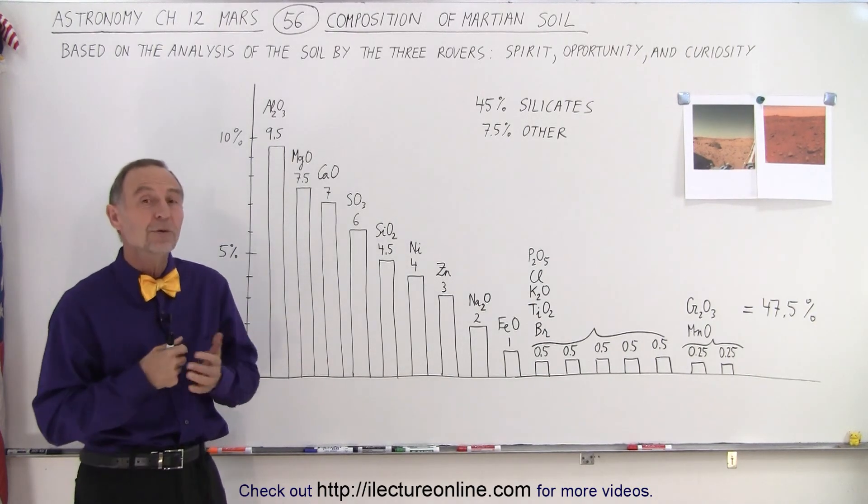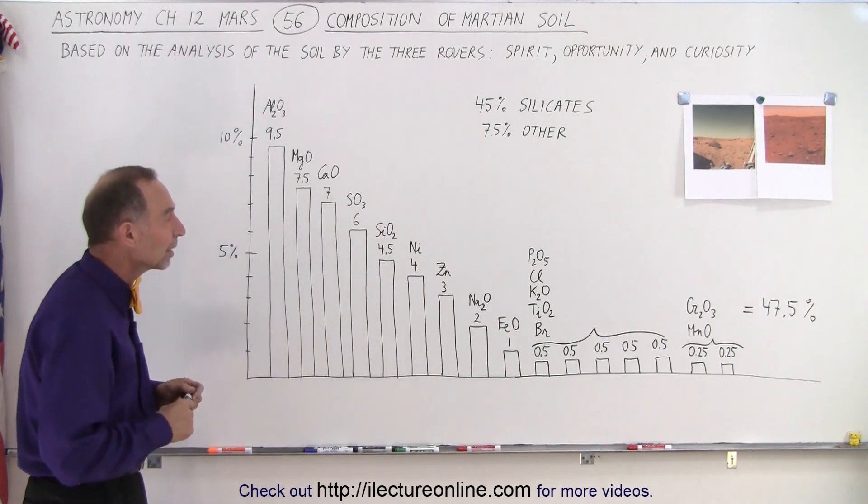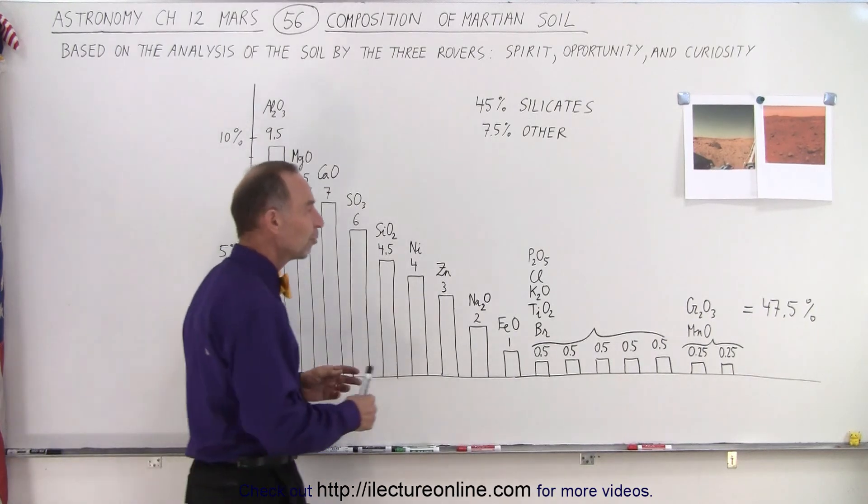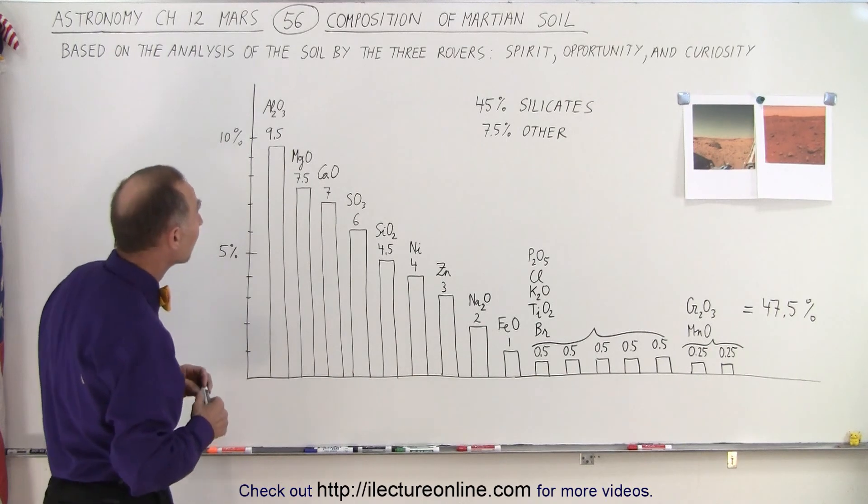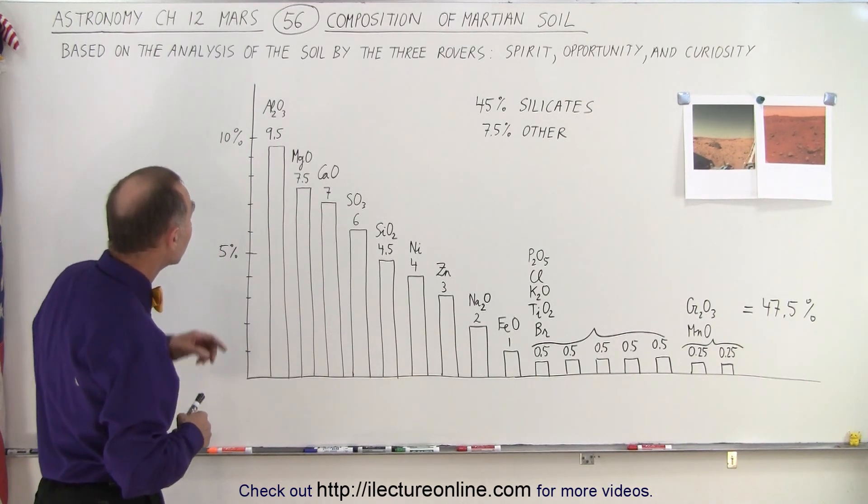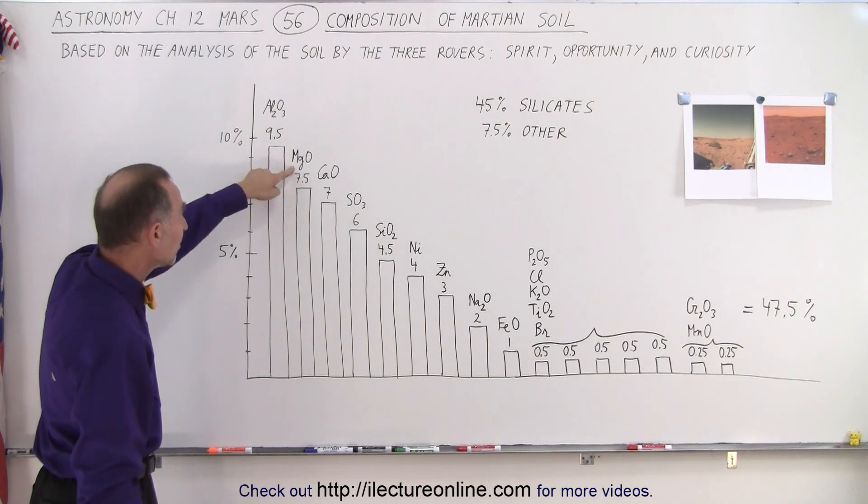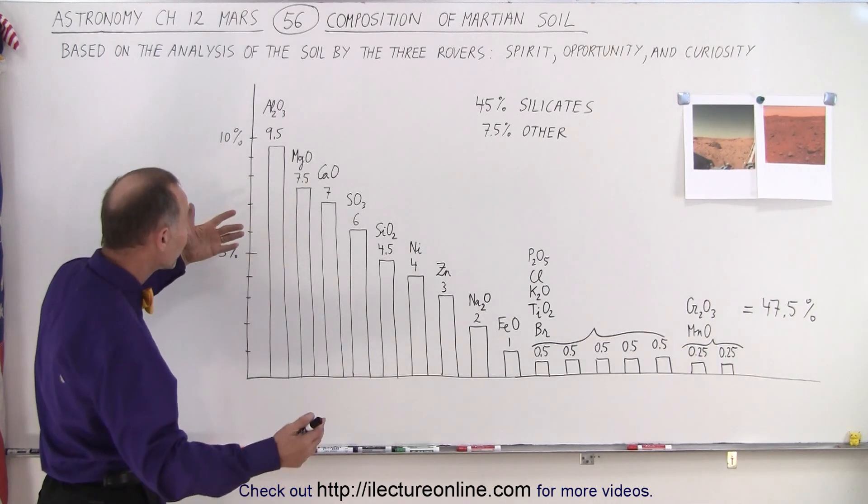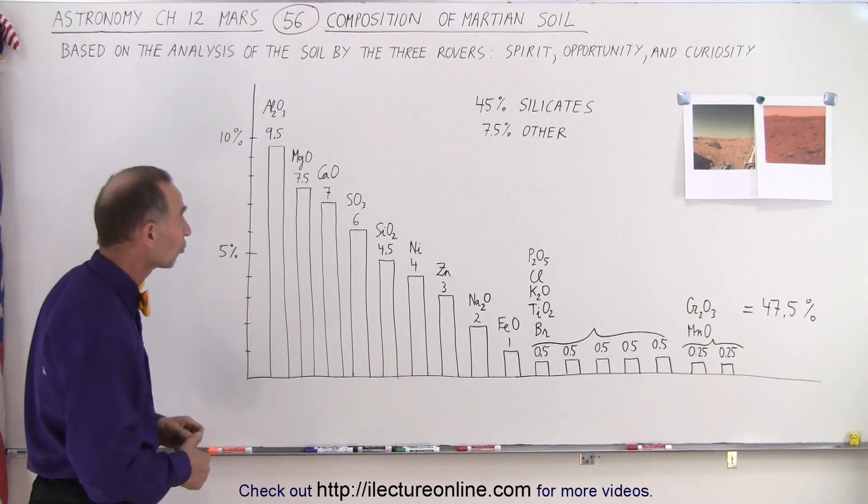And here is what it was found. Notice that we've tried to put it into a relative amount quantity, but notice about the first 47.5% of the Martian soil consists of these particular compounds. And it includes aluminum oxide, 9.5%, magnesium oxide, 7.5%, and calcium oxide at 7%. So these three already make up close to 25% of the Martian soil.